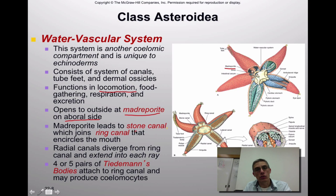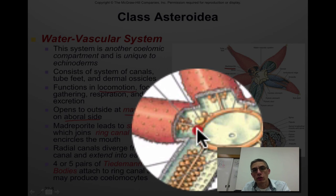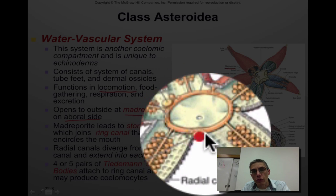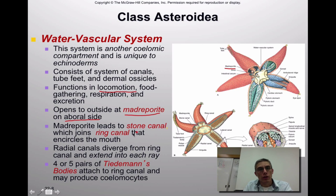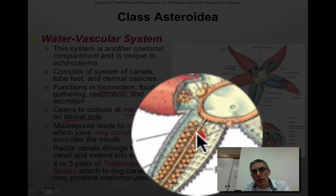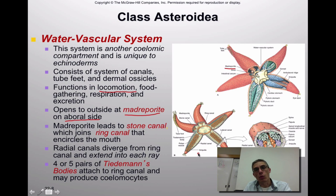The madriporite extends to a structure called the stone canal, which eventually joins the ring canal that encircles the mouth. You can see the madriporite here, and the stone canal is the tube that joins the ring canal on the aboral side of the animal. The radial canals diverge from the ring canal and extend into each ray — these are the radial canals you see here, all part of the water vascular system.